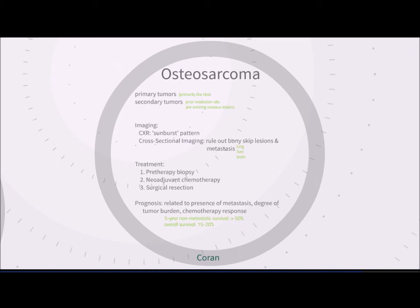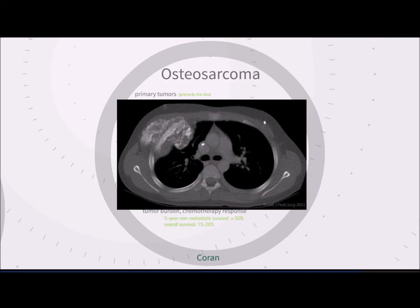Osteosarcoma can be primary or secondary — arising in prior irradiation sites or from pre-existing osseous lesions such as Paget's disease. Primary tumors are often affiliated with the ribs and can be confused with chondrosarcomas. Imaging reveals a sunburst pattern on chest x-ray. Additional imaging should rule out bony skip lesions and distant metastases (lung, liver, brain). Biopsy is performed prior to therapy, and neoadjuvant chemotherapy followed by surgical resection is the approach. Prognosis is related to metastasis, tumor burden, and chemotherapy response, with 15–20% overall survival but a 5-year survival rate exceeding 50%.